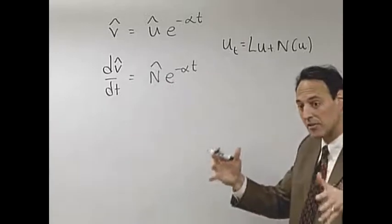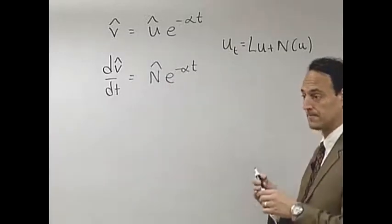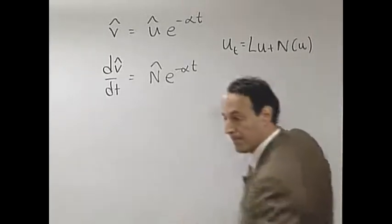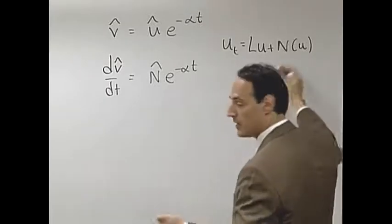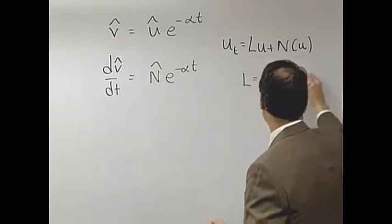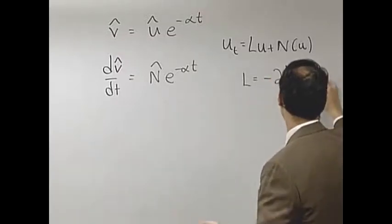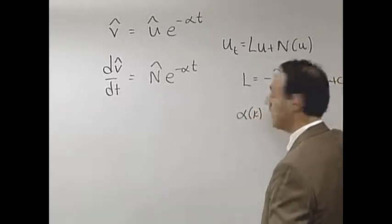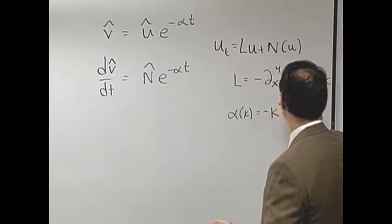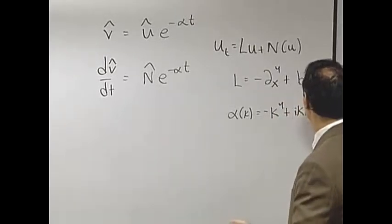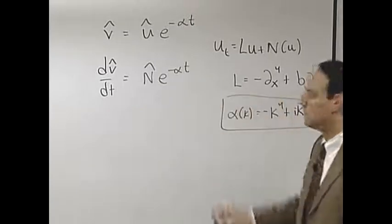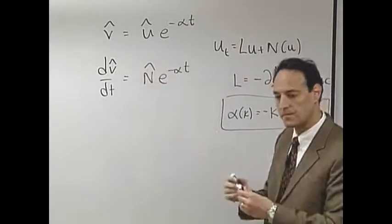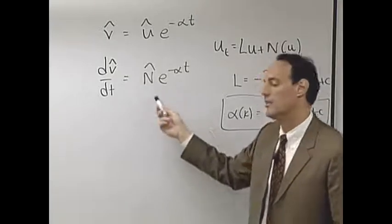So for instance, if L is let's say a fourth derivative plus b times the first derivative plus c, then α(k) would be minus k to the fourth plus ik with a b in there plus c. And in some sense you said, if I've got all these terms in the linear term, this here accounts for it explicitly and exactly, and then ask what are the corrections now from having the nonlinear term.